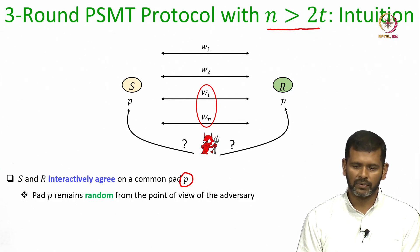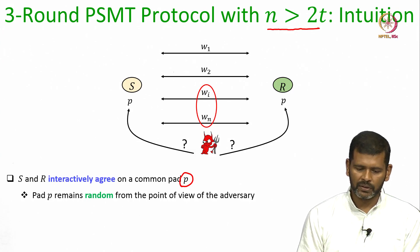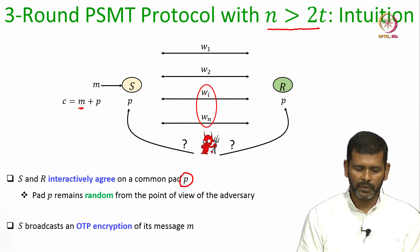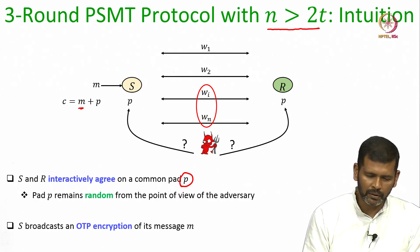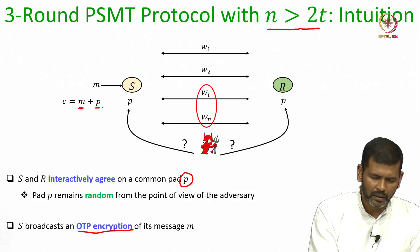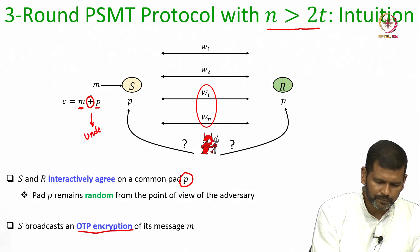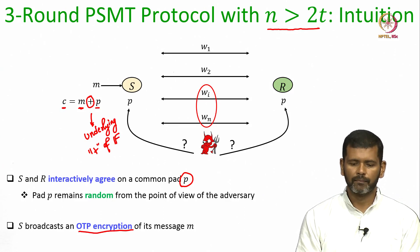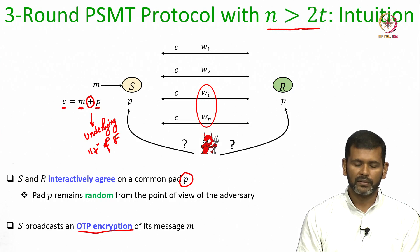Assume such a pad exchange protocol exists giving you these guarantees. Then to securely send a message m, which is the sender's input, the sender can compute a one-time pad encryption of its message. The one-time pad encryption is simply the addition of the message with the pad P, where addition is the underlying field operation, and the resultant ciphertext C will be broadcasted to the receiver over all the channels.